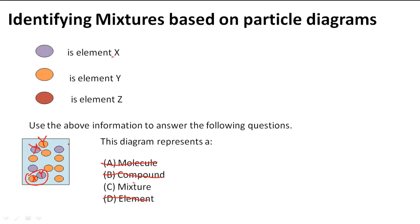We don't know if it's heterogeneous or homogeneous because we don't have a description of how it looks or if we can see the difference. So we just know that it's a mixture. That is the answer to our question.